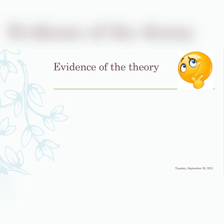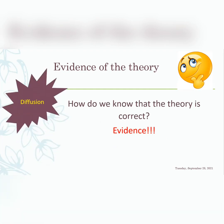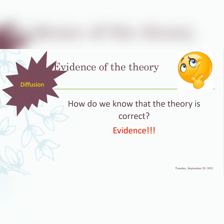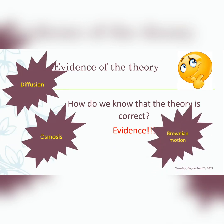What evidence supports that matter is made up of particles in constant random motion? The first piece of evidence is diffusion. The second is osmosis. The third is Brownian motion. All three tell us that matter is made up of particles and that the particles are in constant random motion.